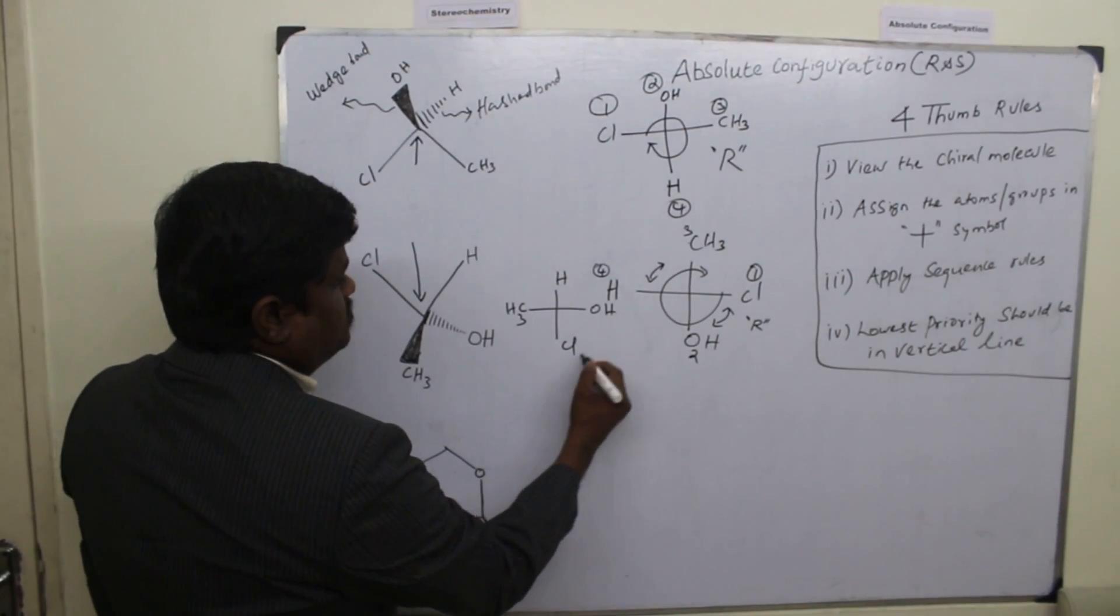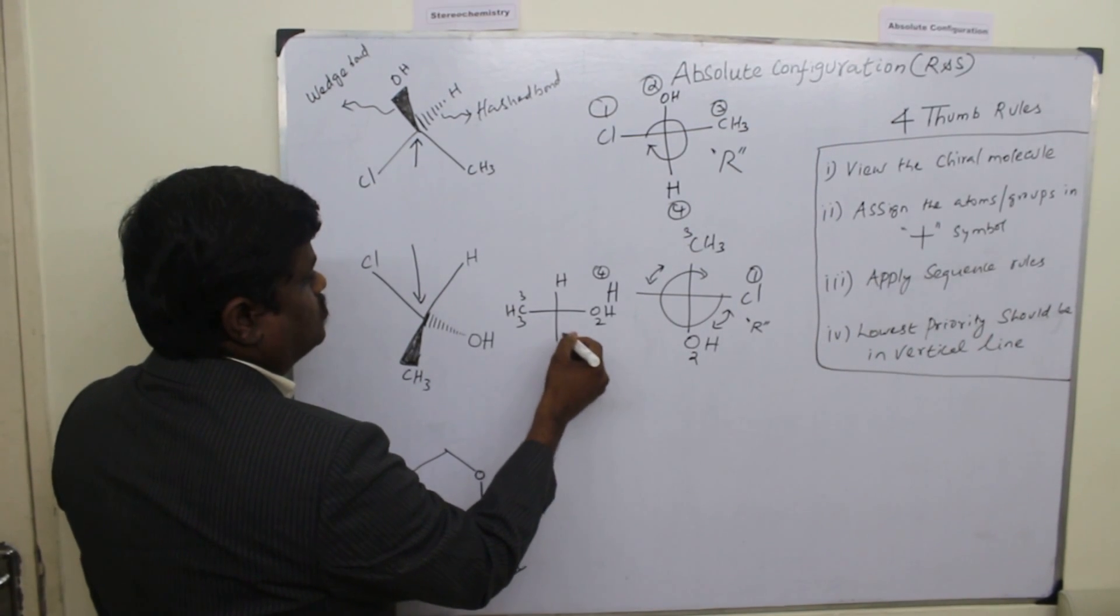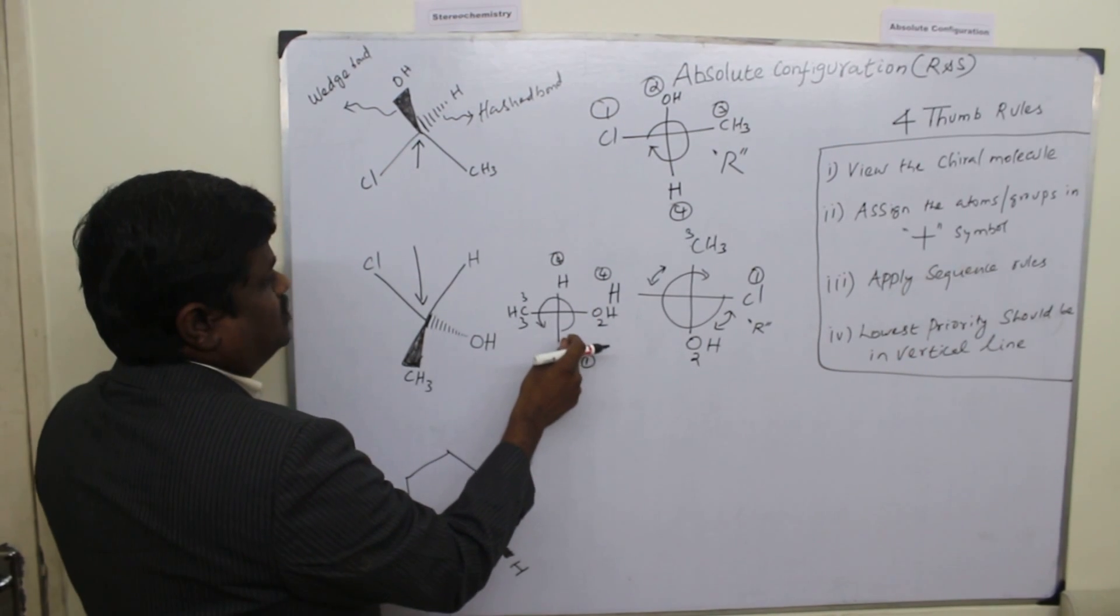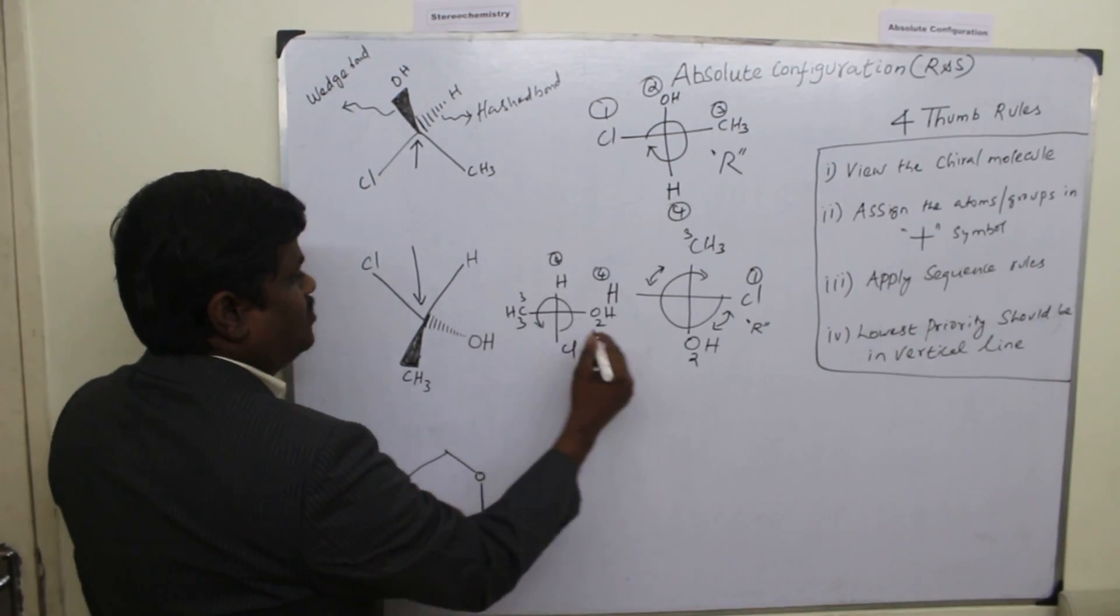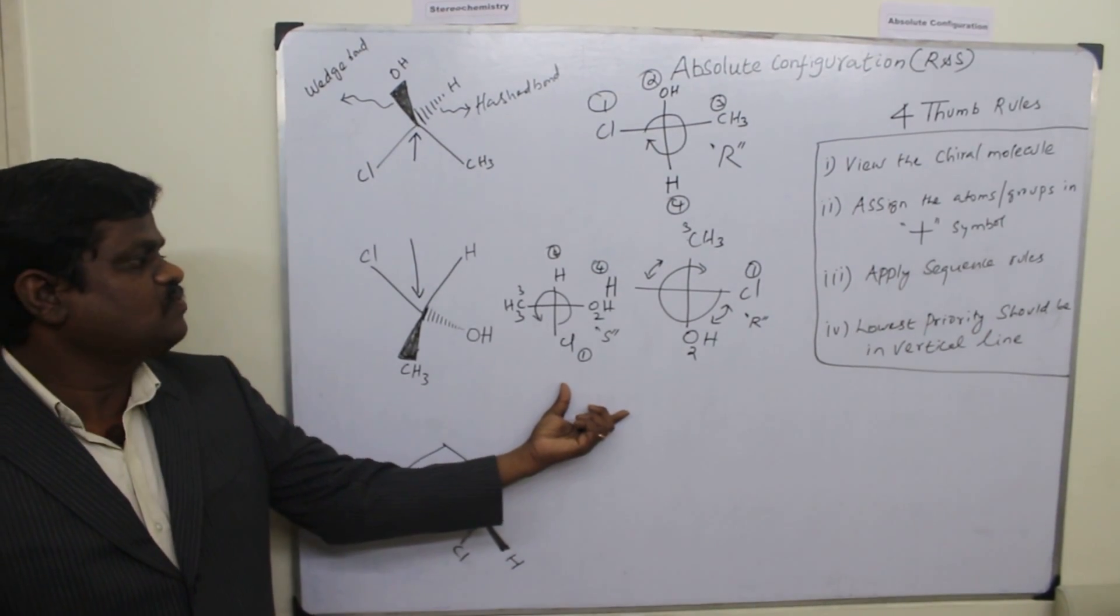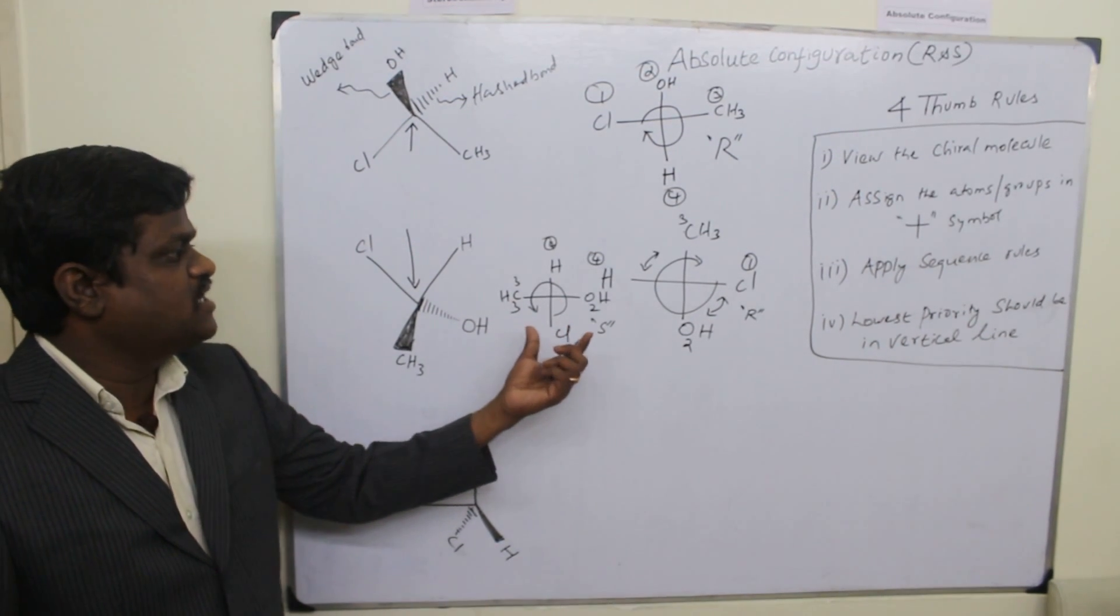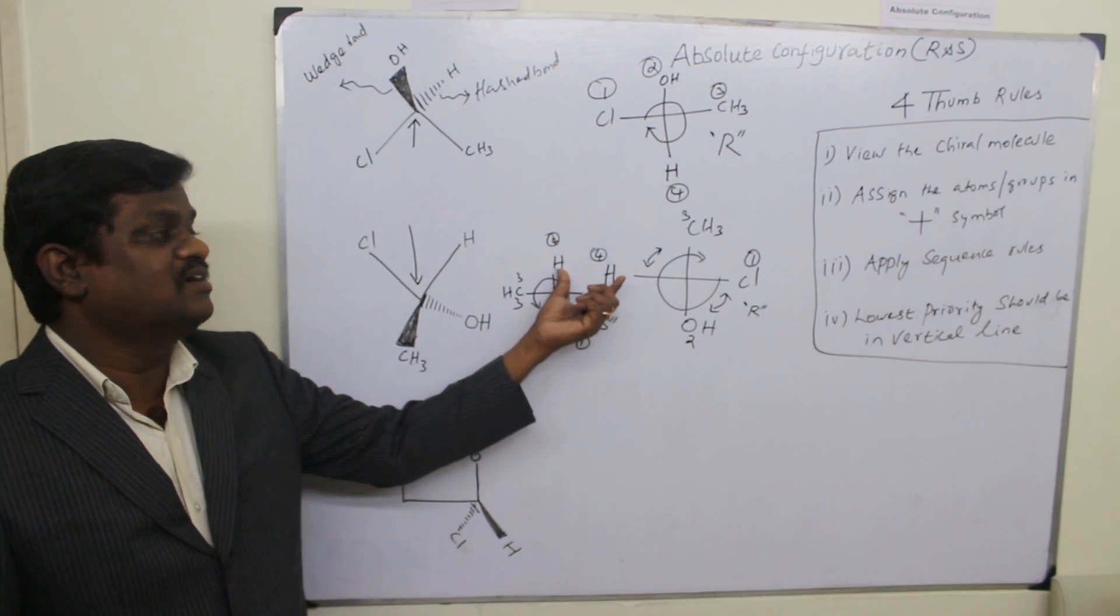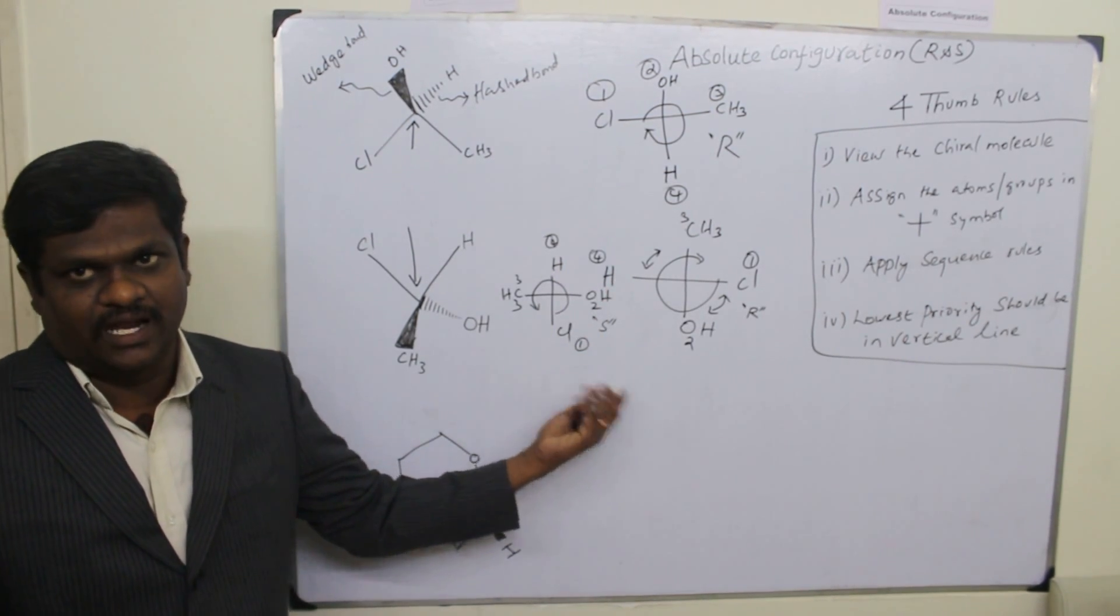So again apply the sequence rule. One, two, three. So it goes like this. One, two, three. So this is clockwise or anticlockwise? This is anticlockwise. So this is the final check. So please remember that we should always confirm that configuration after seeing the lowest priority is on the vertical line. It should be either on top of the vertical line or bottom of the vertical line.